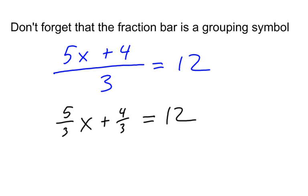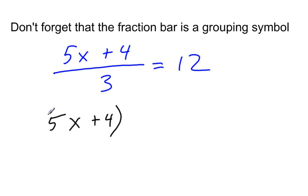But let's take an easier path. Ready? Here's the easiest path. We're going to treat this as if it said 5x plus 4, all of that grouped together and then divided by 3. Let's change this into a division. Equals 12.